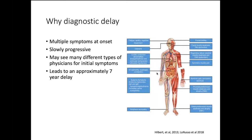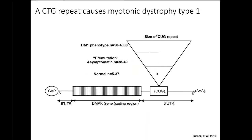So why the diagnostic delay? Really, there's lots of different reasons. There's multiple symptoms at the onset. As many of you know, some people really have a lot of cognitive concerns at the beginning, or it could be as simple as the cataracts. It could be the muscle weakness or the myotonia as the presenting symptoms. So what that means is that they may see many different types of physicians for these initial symptoms, some more or less familiar and savvy with the diagnosis of myotonic dystrophy type 1, and that can really lead to some of the challenges in terms of the delay. This estimate about the seven-year delay was taken from a paper by Jim Hilbert and Dick Moxley at the University of Rochester.